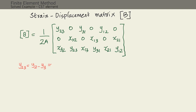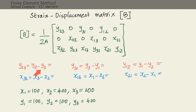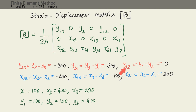To evaluate the B matrix we need x1, x2, x3 and y1, y2, y3, which are given. Computing the differences: y₂₃ = y2 − y3 = 100 − 400 = −300. Similarly, x₃₂ = −200, x₁₃ = −100, and x₂₁ = 300. We can now fill in all elements of the matrix.